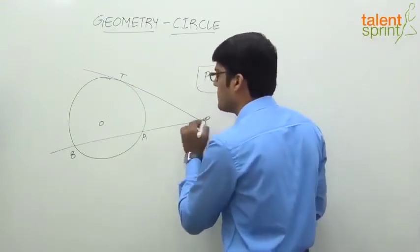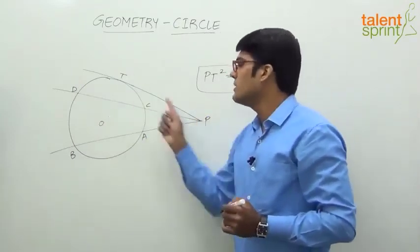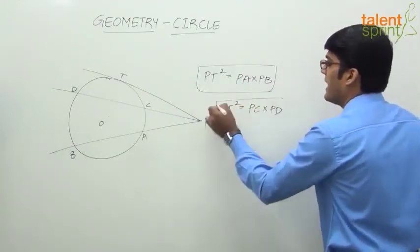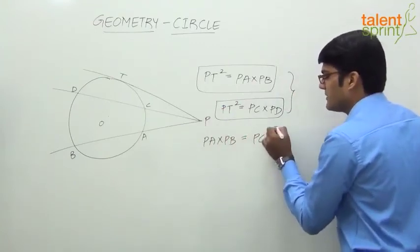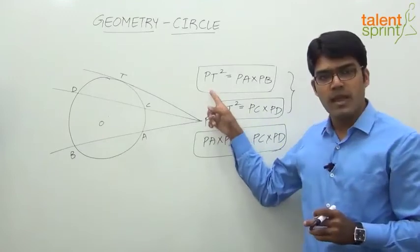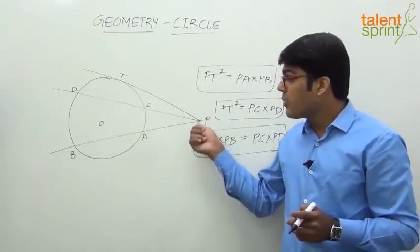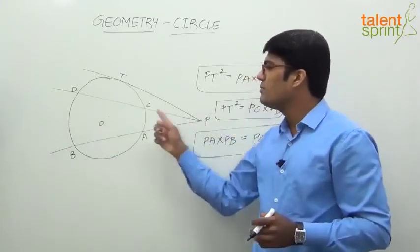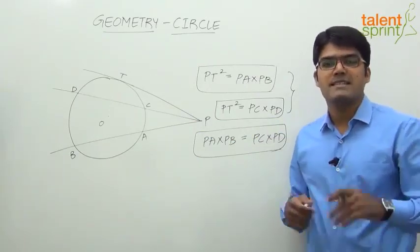This is an important property based on tangents and secants. Furthermore, if we draw another secant from point P cutting the circle at C and D, then PT² = PC × PD as well. Combining these two results: PA × PB = PC × PD. So two conclusions: first, from an external point, the square of the tangent length equals PA × PB where A and B are where the secant cuts the circle; second, from an external point drawing two secants PAB and PCD, then PA × PB = PC × PD.